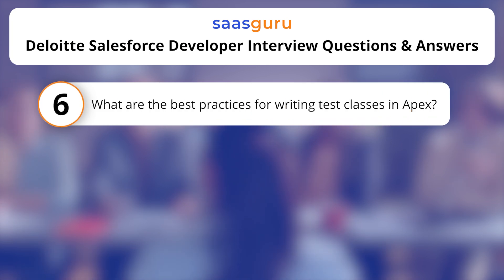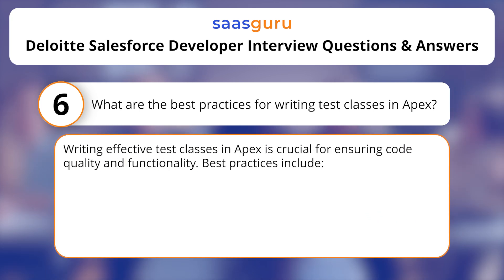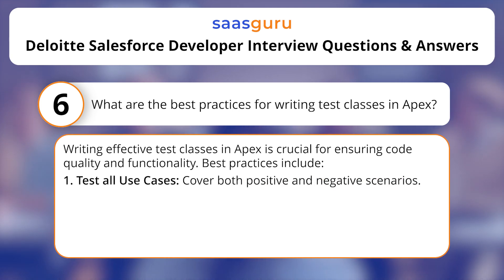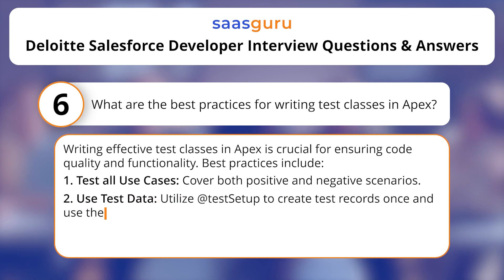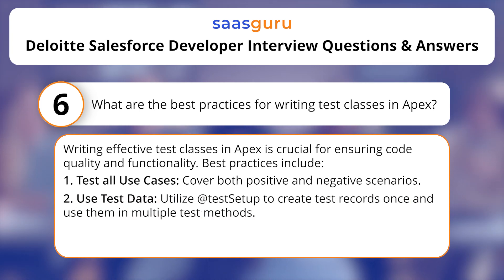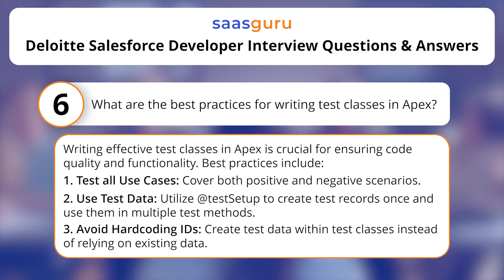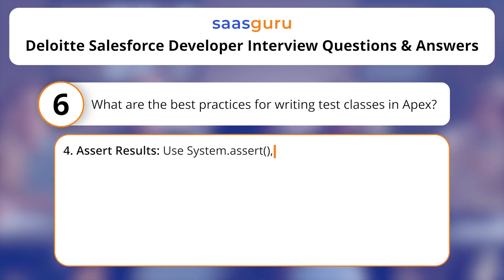What are the best practices for writing test classes in APEX? Writing effective test classes in APEX is crucial for ensuring code quality and functionality. Best practices include: test all use cases — cover both positive and negative scenarios; use test data — utilize @testSetup to create test records once and use them in multiple test methods; avoid hard-coding IDs — create test data within test classes instead of relying on existing data.